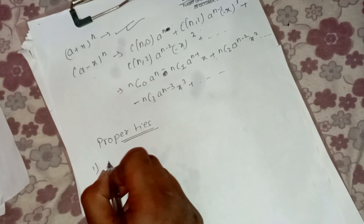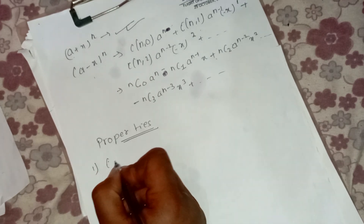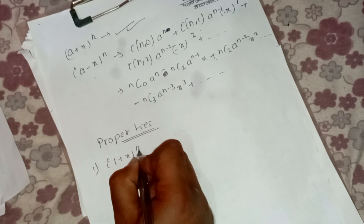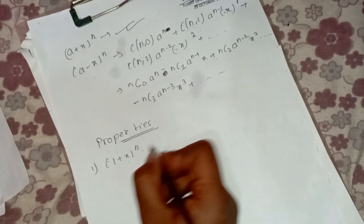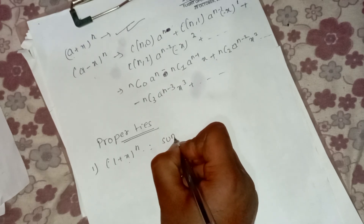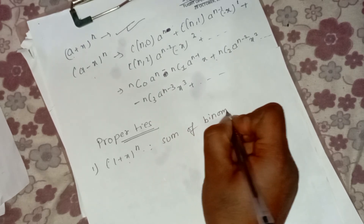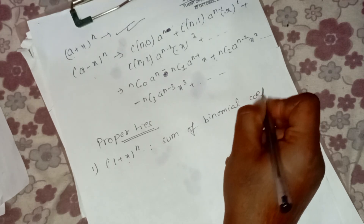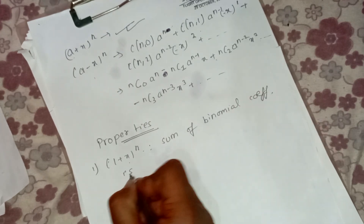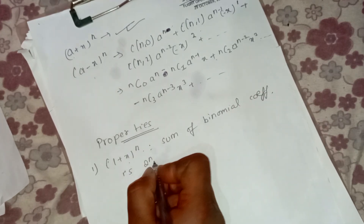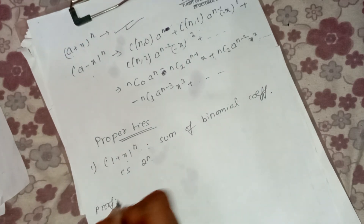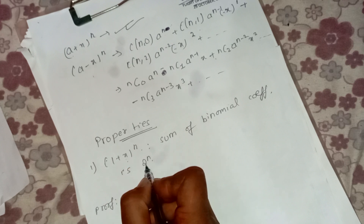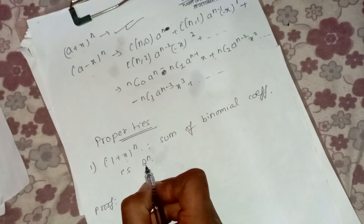The first property: the sum of binomial coefficients is 2 to the power n. We can show this using (1 + x)^n. We will put x equal to 1. Then (1 + 1)^n equals 2^n.